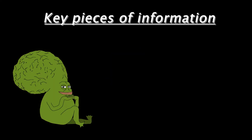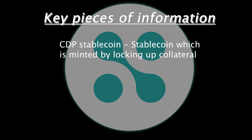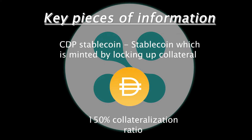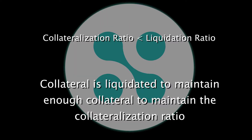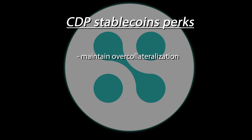Before we continue, let's backtrack and establish some key pieces of information. For users who are new to stablecoins, a CDP stablecoin — or collateralized debt position stablecoin — works by allowing users to mint stables based on the value of a collateral which they lock up. The most famous case of this is MakerDAO's DAI, which requires a collateralization of 150% on all DAI minted. If the value of collateral begins to drop and the collateral-to-debt ratio begins to drop, MakerDAO has a safety mechanism to ensure DAI doesn't become undercollateralized. If the collateral-to-debt ratio breaches their predetermined liquidation ratio, Maker will automatically liquidate the collateral. In this way, CDP stablecoins ensure that they are constantly overcollateralized, giving them an additional layer of security.